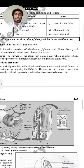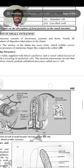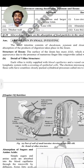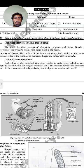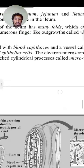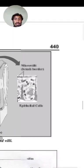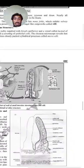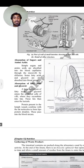The electron microscope reveals that the epithelial cells have countless closely packed cylindrical processes called microvilli. These microvilli greatly increase the surface area for absorption of sugars and amino acids.